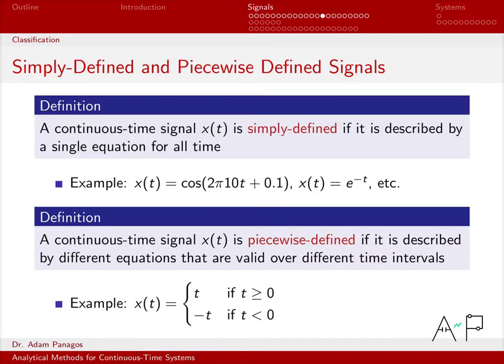In contrast, if we have a piecewise defined signal, in that case, we are now working with a signal which might have different equations for different parts of time. And when we have that, the notation that we use is this bracket right here. And inside that bracket, we'll write multiple equations that are each defined on different time intervals.